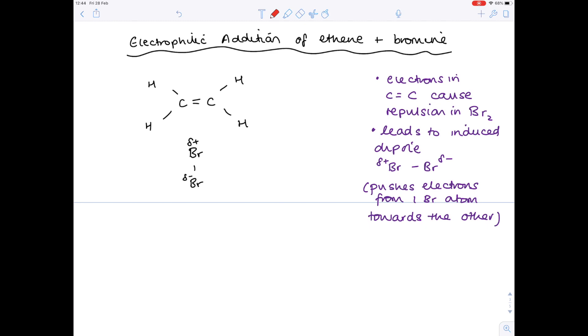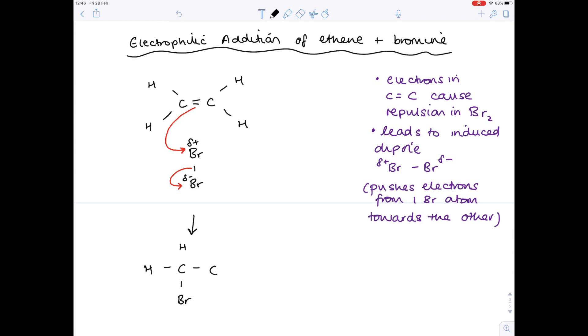Now it's time to introduce the all-important curly arrows, and they must be curly arrows, and this is where you'll actually be scoring all your marks. I've already said that the electrons in the C double bond C cause repulsion in the Br2. We'll show the formation of that induced dipole by drawing a curly arrow from the middle of that C double bond C going towards the slightly positive Br atom, and this is going to push the electrons from one Br atom towards the other. So what does that actually mean for our species? We're going to redraw that ethene, but it will be slightly different now, because effectively one of those Br atoms has joined. The rest of the ethene molecule remains the same, and then effectively we're missing a bond with that second carbon, so we've created what's known as a carbocation, so it's a positively charged carbon atom.